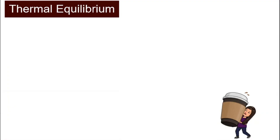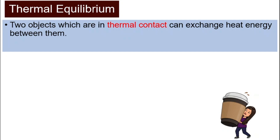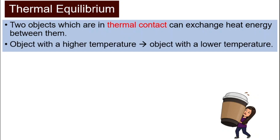Next, we'll look at thermal equilibrium. When two objects are in thermal contact, they can exchange heat energy between them — meaning heat can transfer or move from one to the other. Heat will flow from an object with a higher temperature, from the hot region, to the object with a lower temperature.